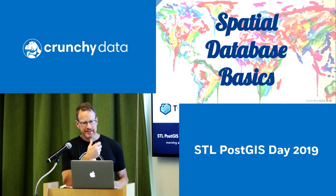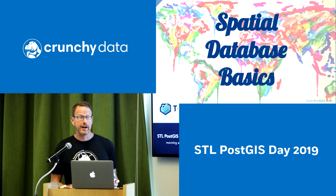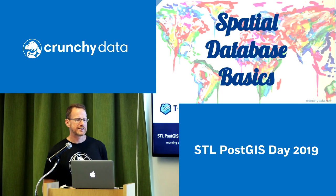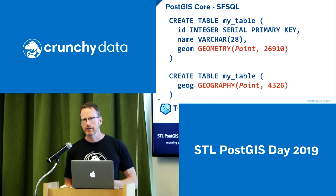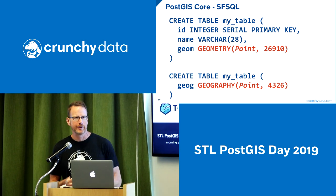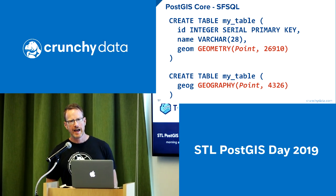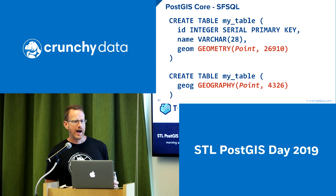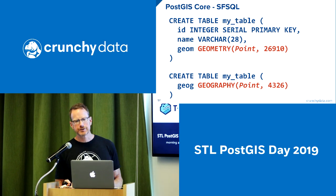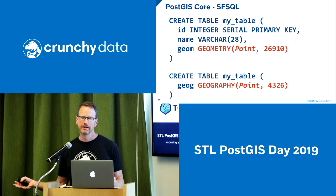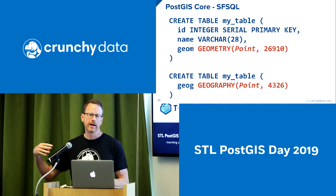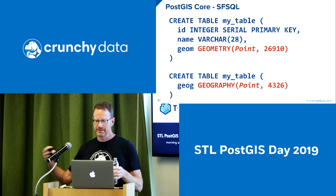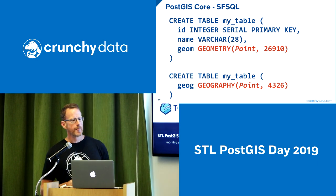What do you expect from a spatial database? You need geometry and geography. Declaring a column is no different from standard SQL — you just declare a table with columns and types, and among the types you might choose are geometry and geography. Just like a VARCHAR can have a length restriction of 20, a geometry can have a type restriction of point, line, polygon, multipoint, multiline, or multipolygon, and it can have a spatial reference system restriction — for instance 26910, which dereferences to UTM Zone 10.